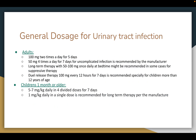General dosage for urinary tract infections in adults: 100 milligram two times a day for a five-day therapy is recommended. However, the manufacturer also recommends 50 milligram four times a day for seven days for uncomplicated infections. Long-term suppressive therapy with 50 to 100 milligram once daily at bedtime may be recommended in some cases.